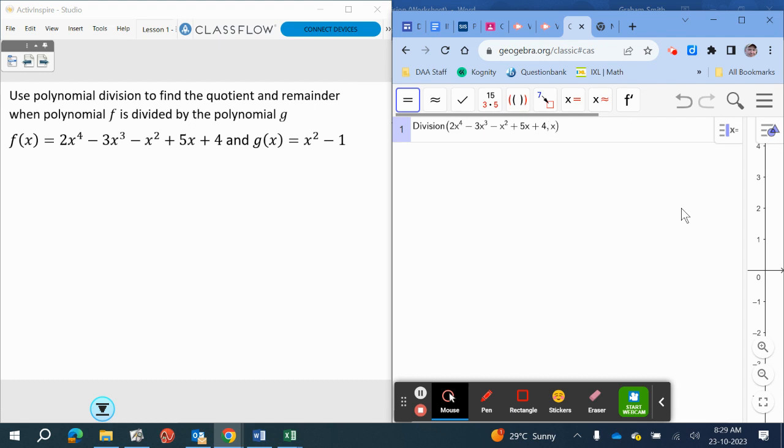Divided by x squared minus 1. And there we get our quotient and remainder. So our quotient is going to be 2x squared minus 3x plus 1, and our remainder is going to be 2x plus 5.